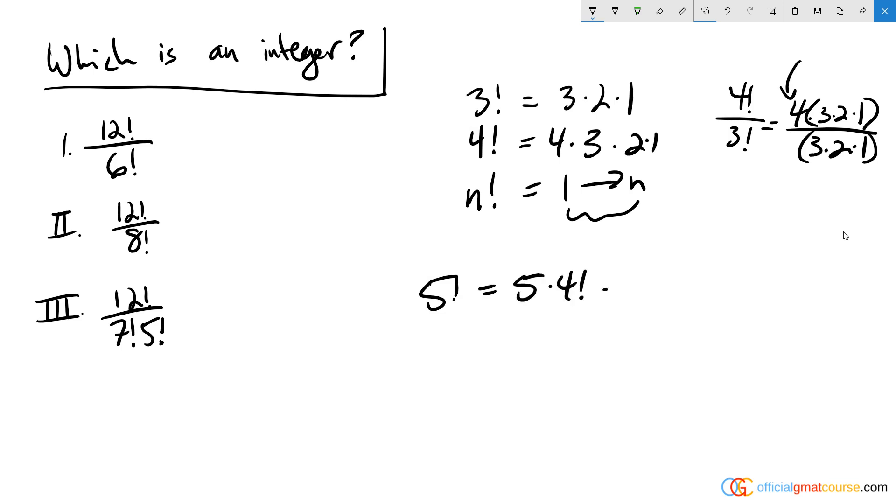And 5 factorial is equal to 5 times 4 factorial, which means it's equal to 5 times 4 times 3 factorial. So every factorial greater than 3 factorial is going to have 3 factorial in it, and every factorial greater than 6 factorial is going to have 6 factorial in it.